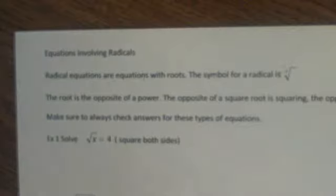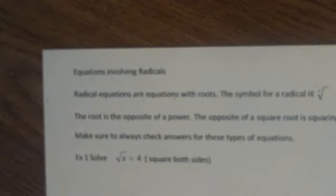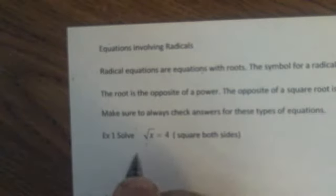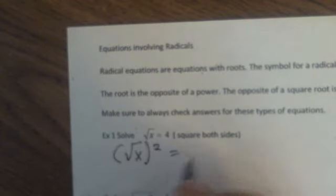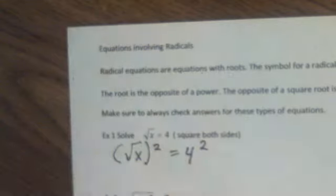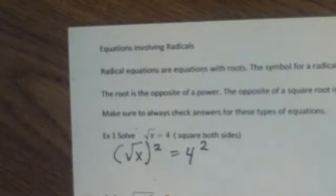So let's look at just solving a very basic square root and one with only a number and only an x underneath the radical. So what we will do here is we will square both sides. Because if I isolate the radical, that allows me to square it to undo the radical itself, and then I get my solution of x equals 16. So that's very basic.